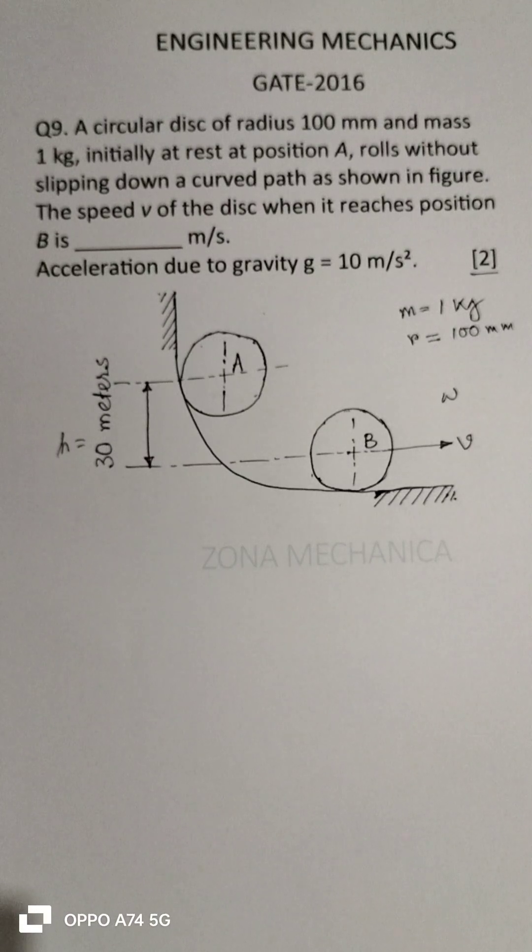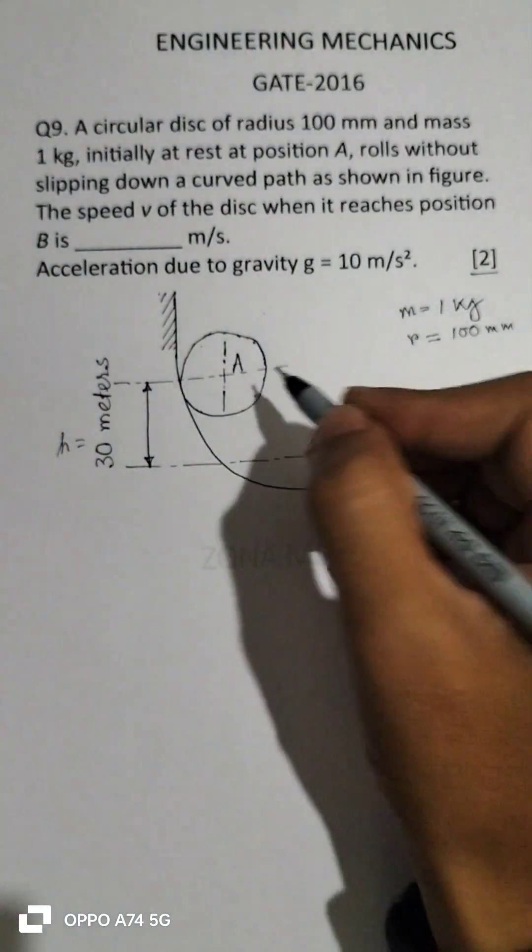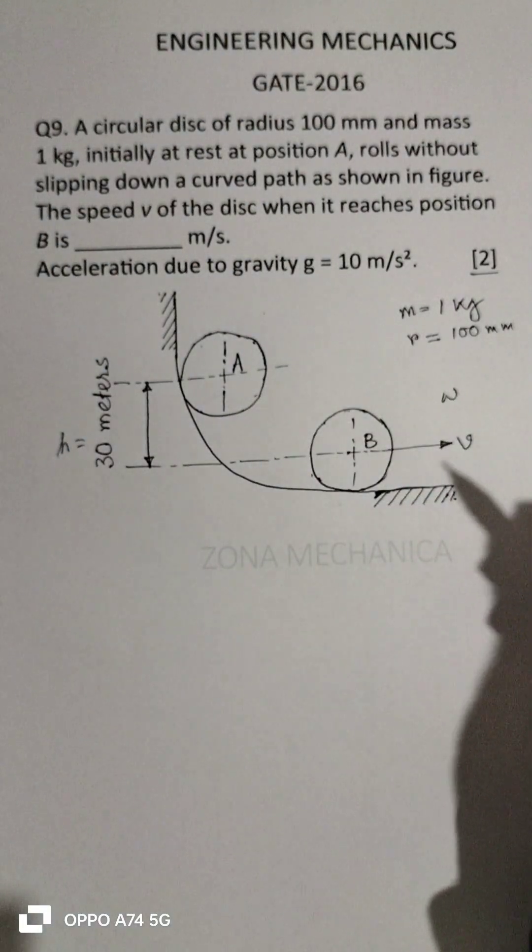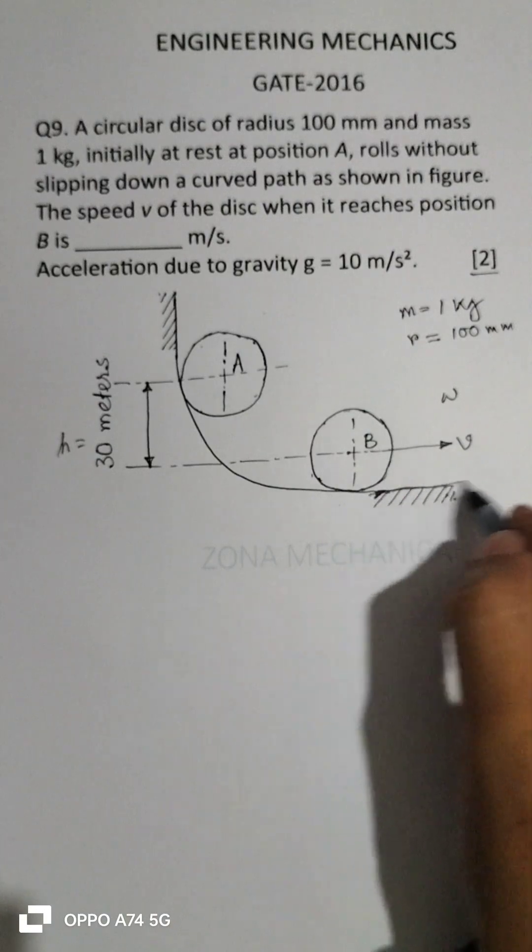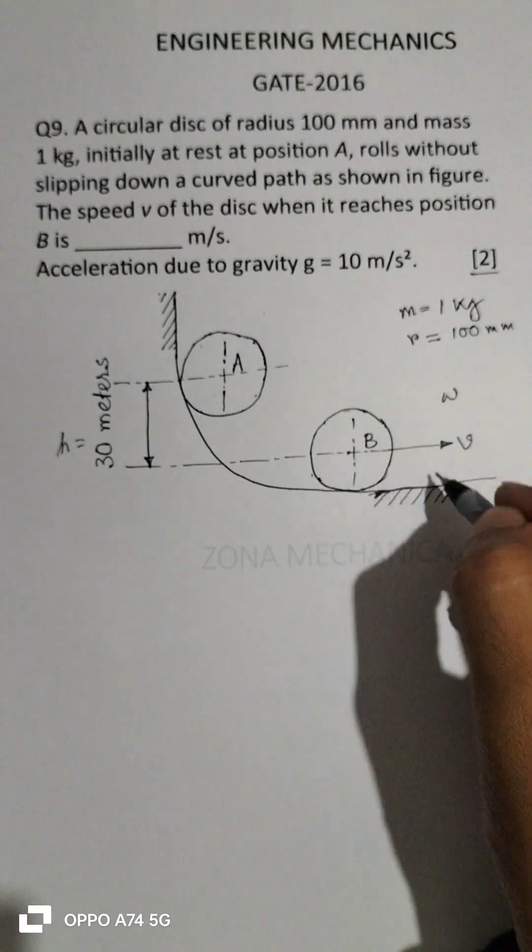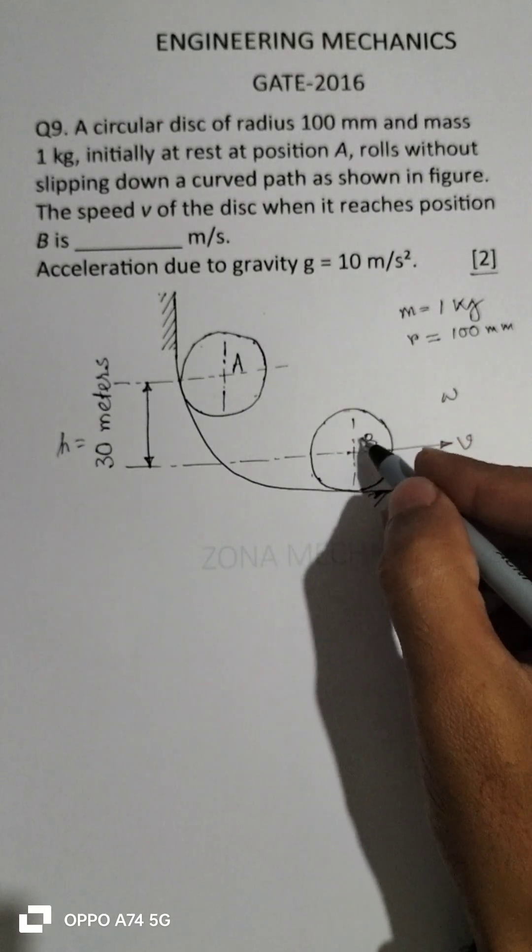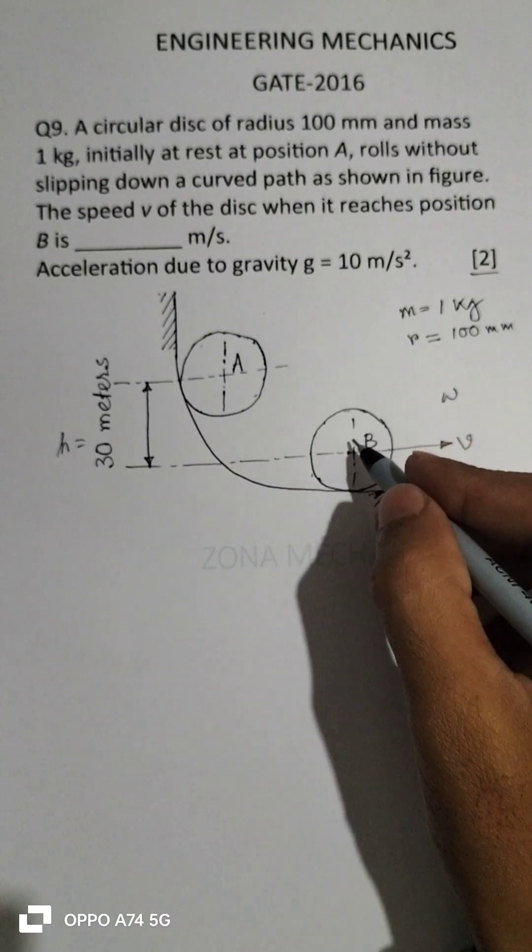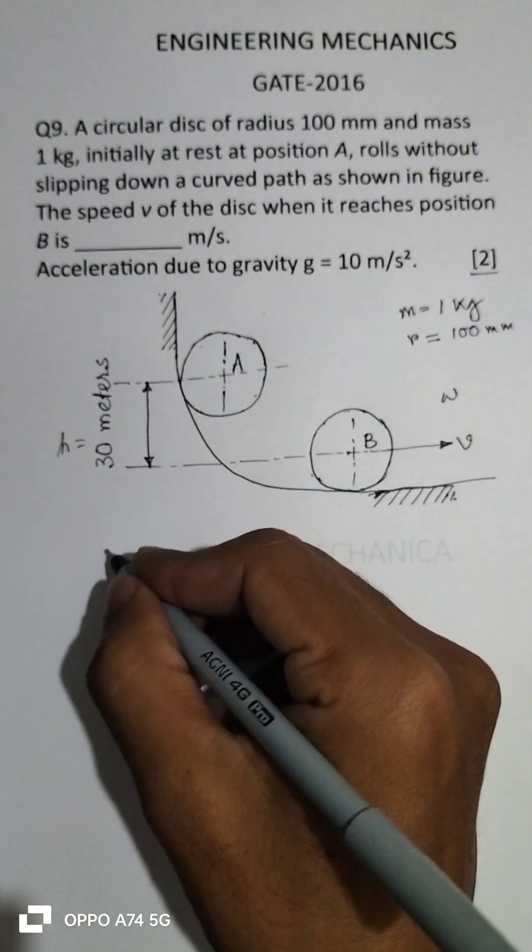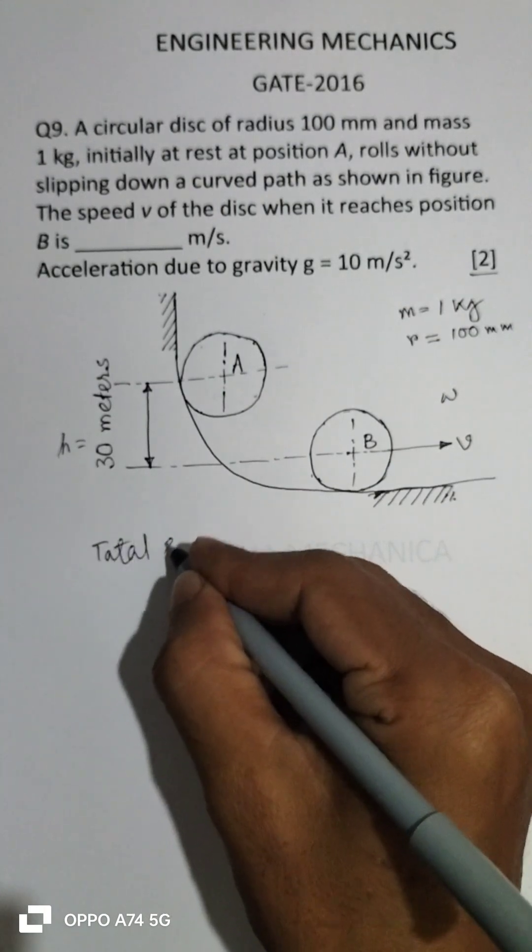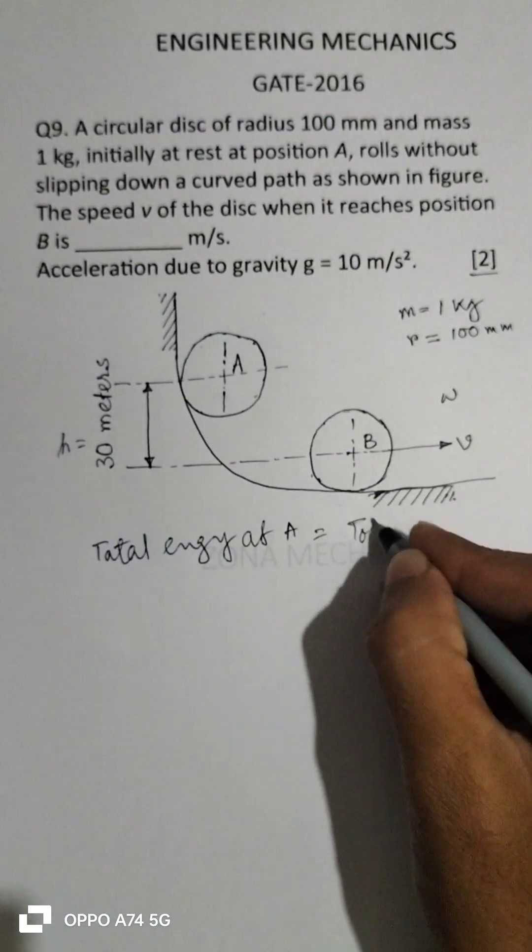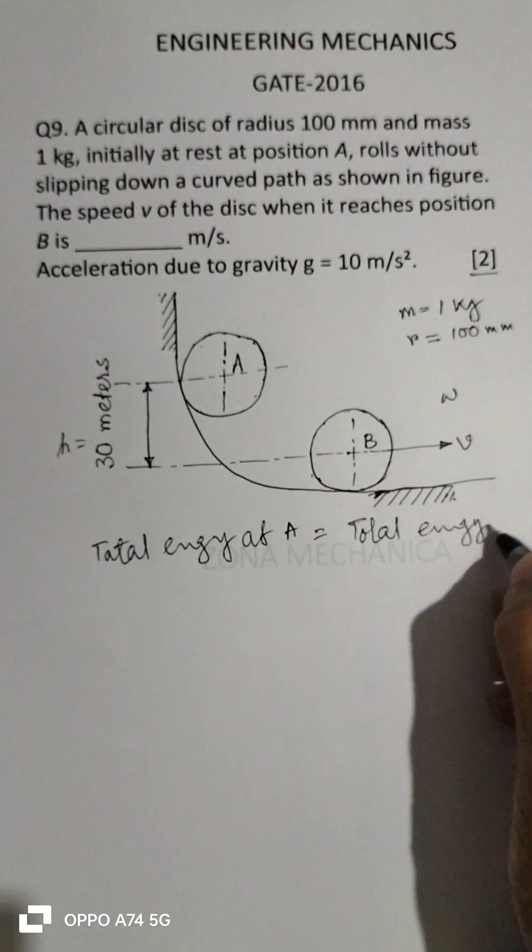At position A, the disk is at rest, so it's having potential energy only, no kinetic energy. At position B, the potential energy is zero at this position. It's having only kinetic energy. By energy balance, total energy at A will be equal to total energy at B.